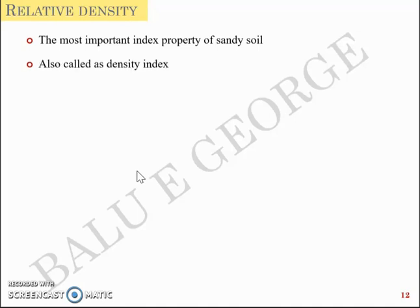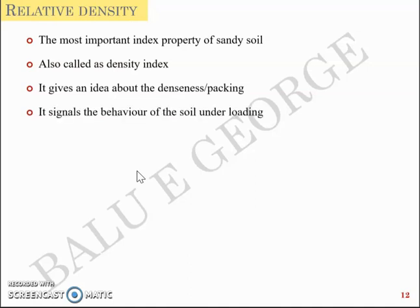Now you have the second index property which is relative density. This is applicable to cohesionless soil or sand in general. Sandy soil has got this relative density as a predominant index property. It's also called as density index and it gives an idea about the denseness or the packing of the sandy soil, and it signals the behavior of soil under loading.